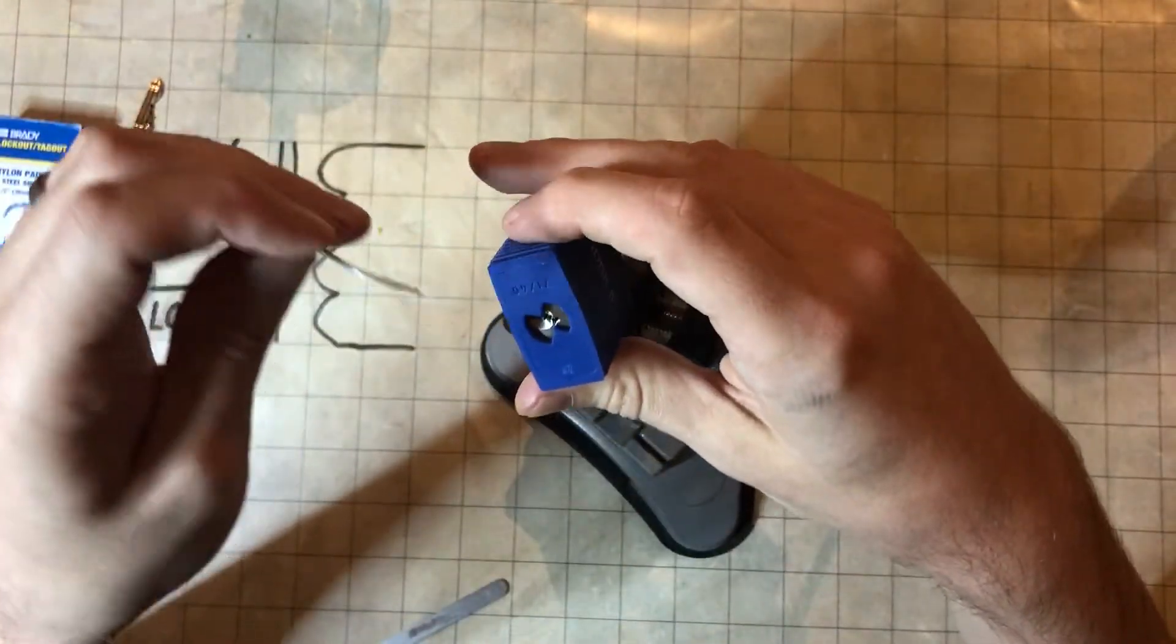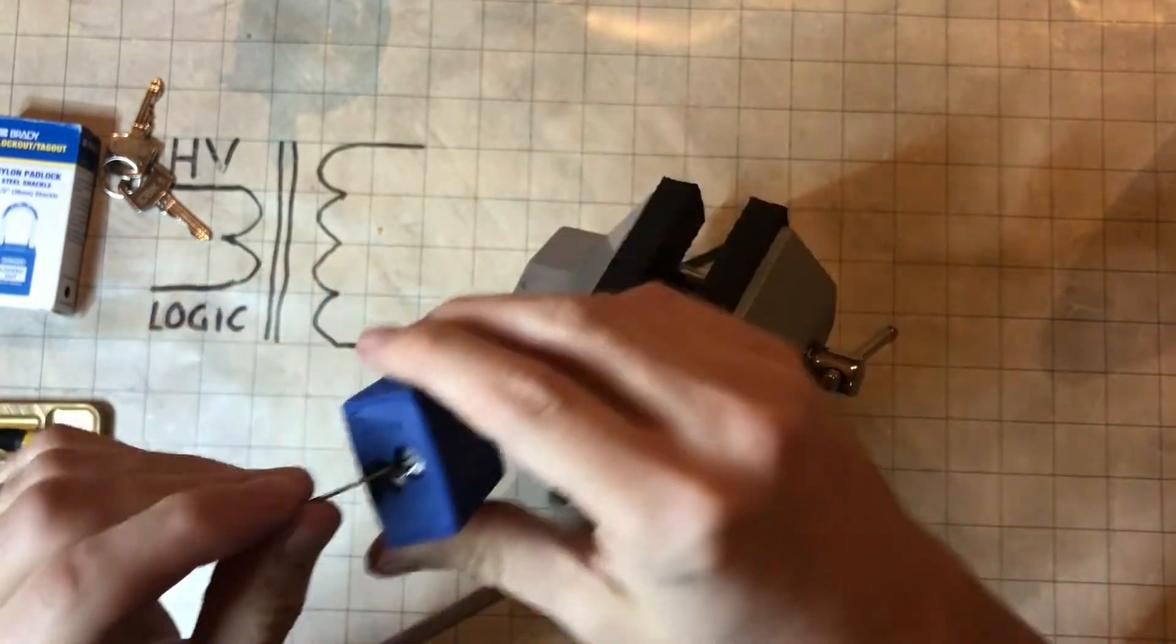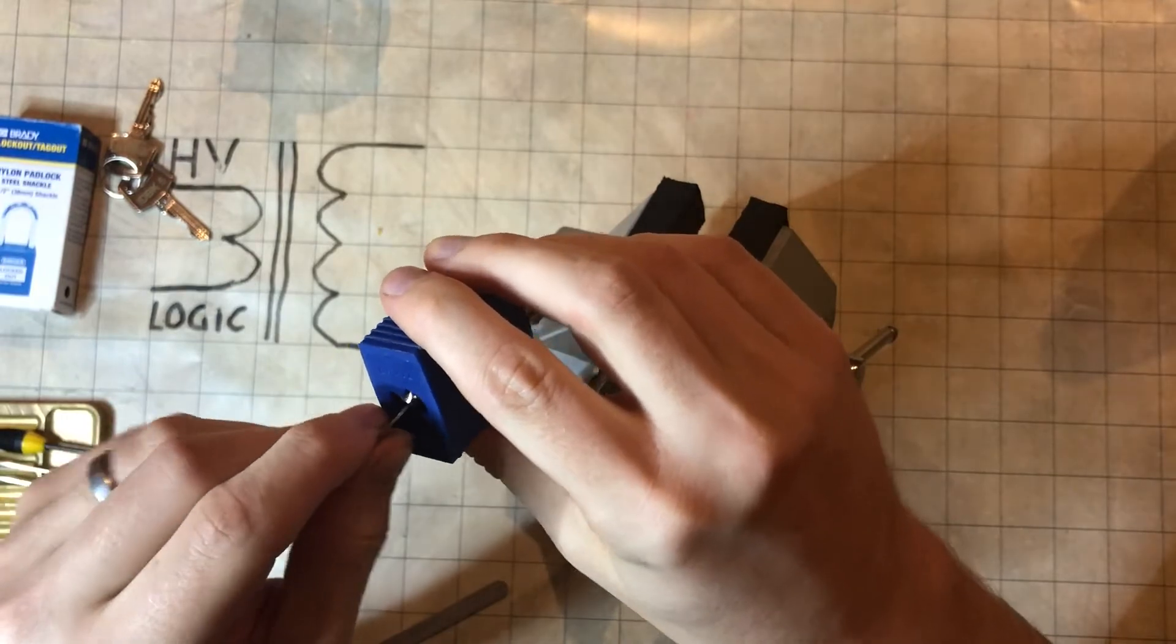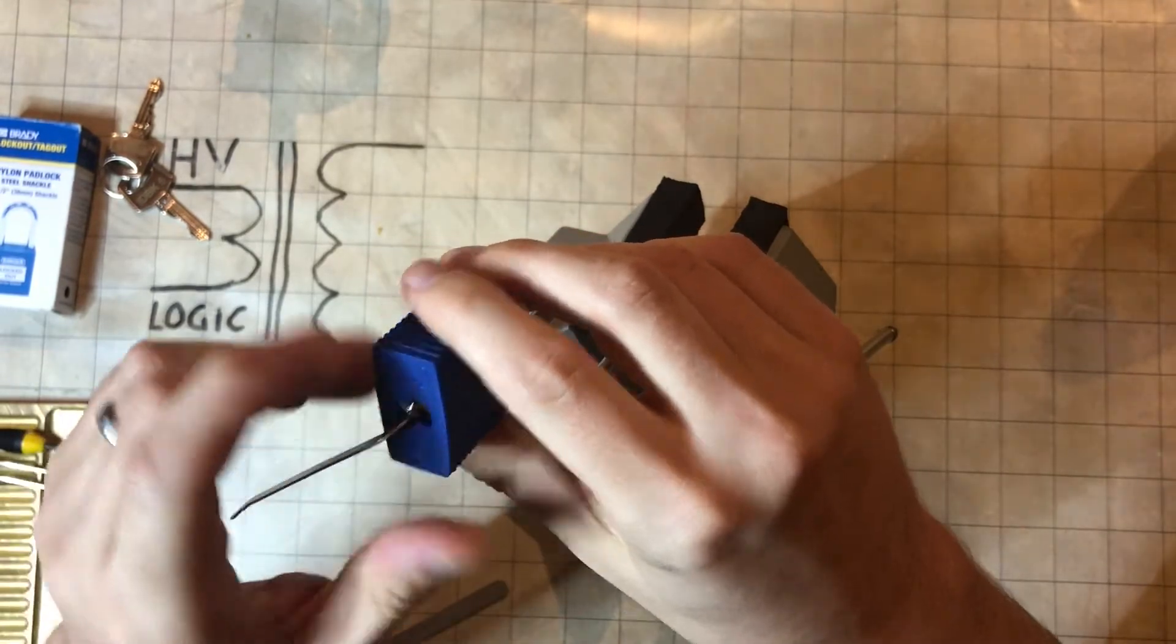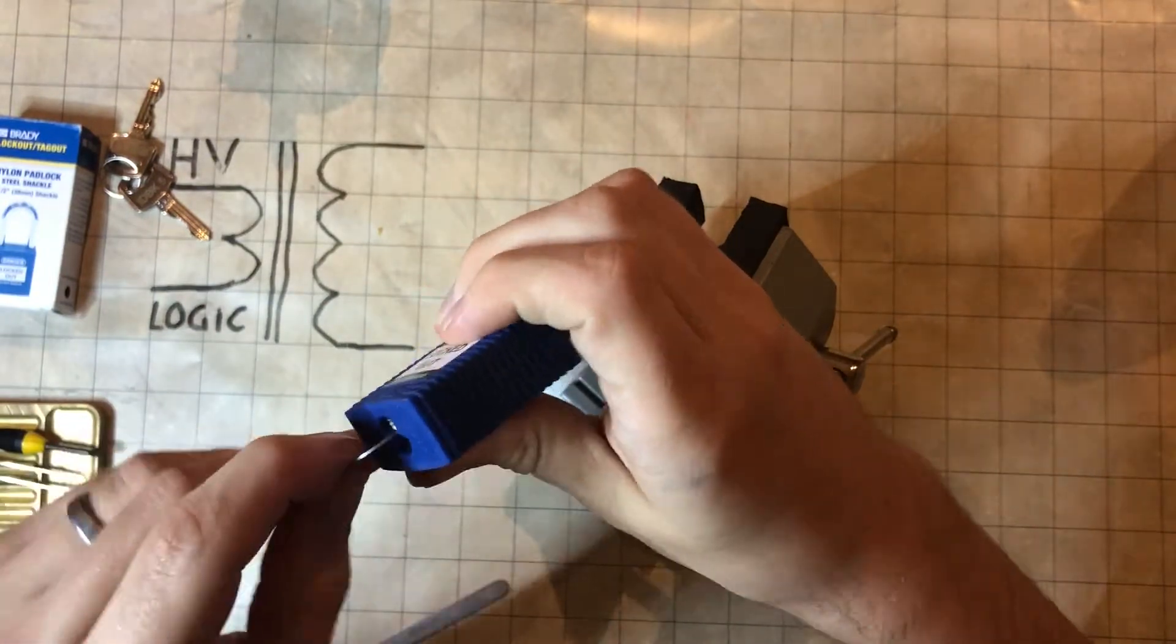Not like the 1100, like most lotto locks, it's not spring-loaded, so we'll just lock that. Oh, must be key-retaining. Yeah. Oh yes, I remember that. That makes sense.